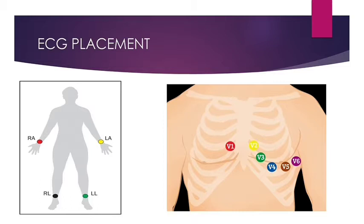Let's discuss the placement of chest leads. V1 is in the 4th intercostal space, right margin of the sternum. V2 is in the 4th intercostal space, left margin of the sternum. V4 is in the 5th intercostal space, mid-clavicular line on the left side. V3 is midway between V2 and V4.